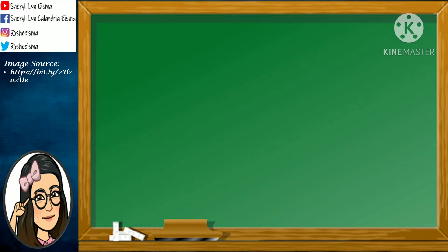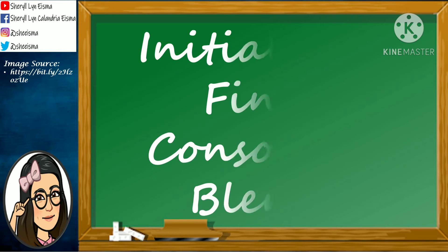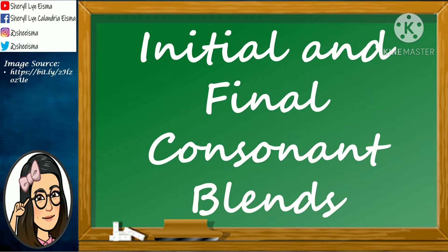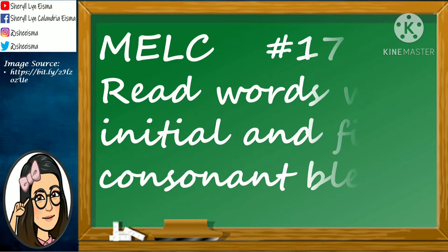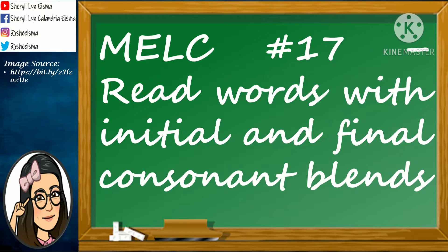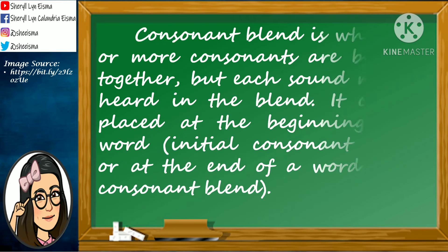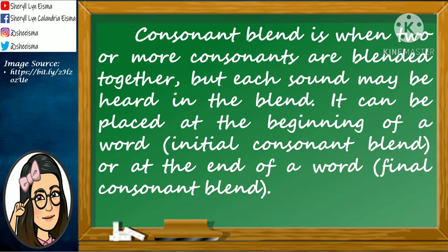Today's lesson is about Initial and Final Consonant Blends. This is based on Most Essential Learning Competency No. 70: Read Words with Initial and Final Consonant Blends. A consonant blend is when two or more consonants are blended together, but each sound may be heard in the blend. It can be placed at the beginning of a word, which we call an Initial Consonant Blend, or at the end of a word, which we call a Final Consonant Blend.